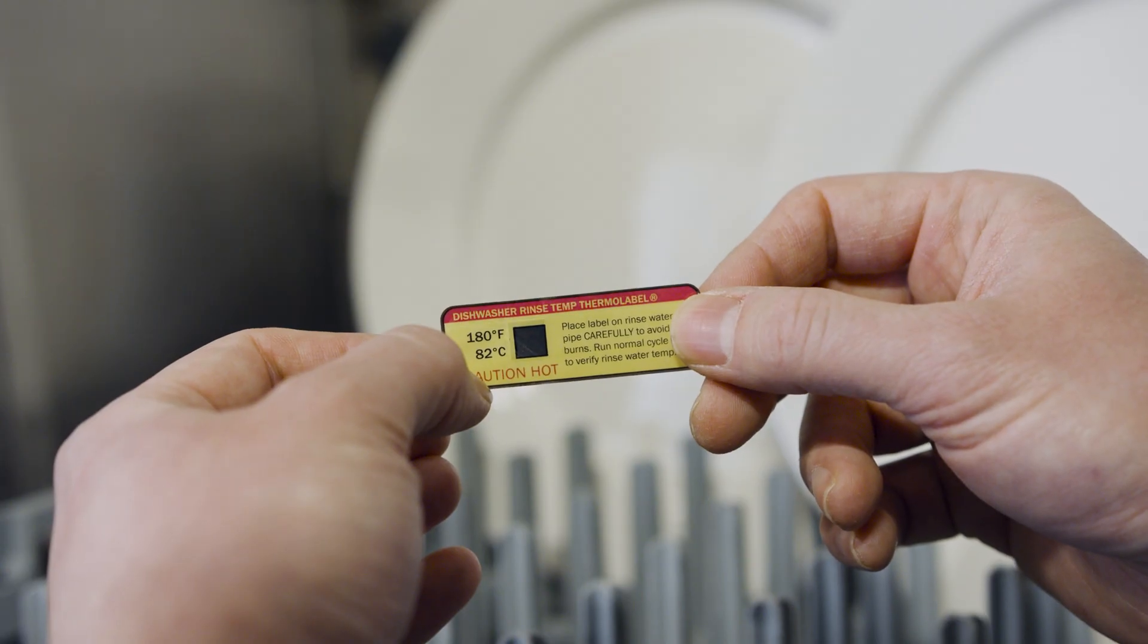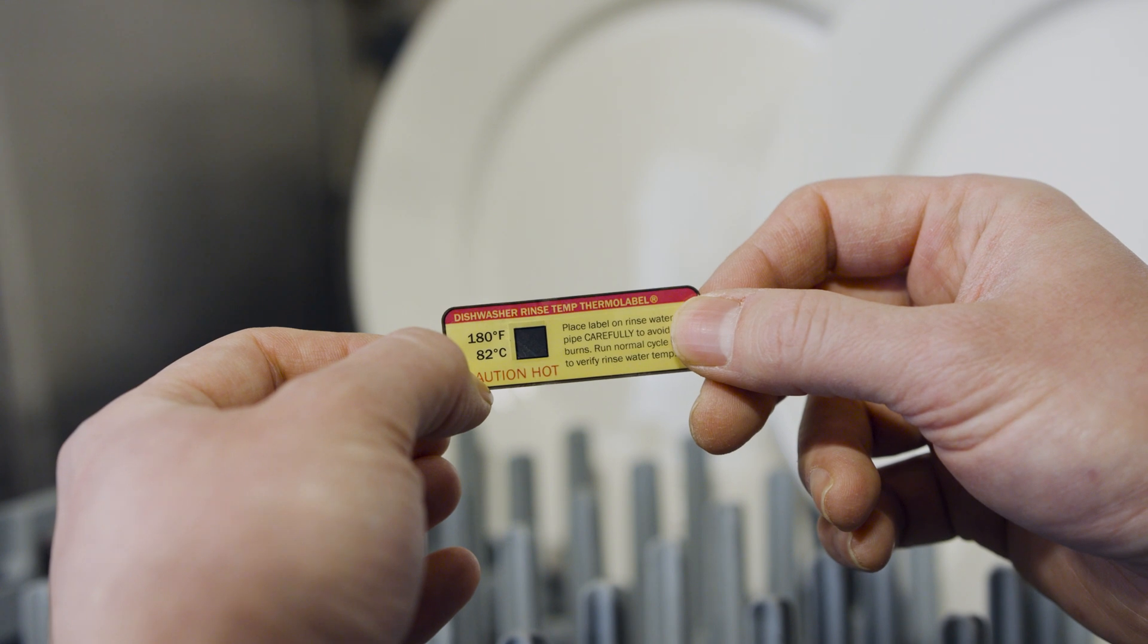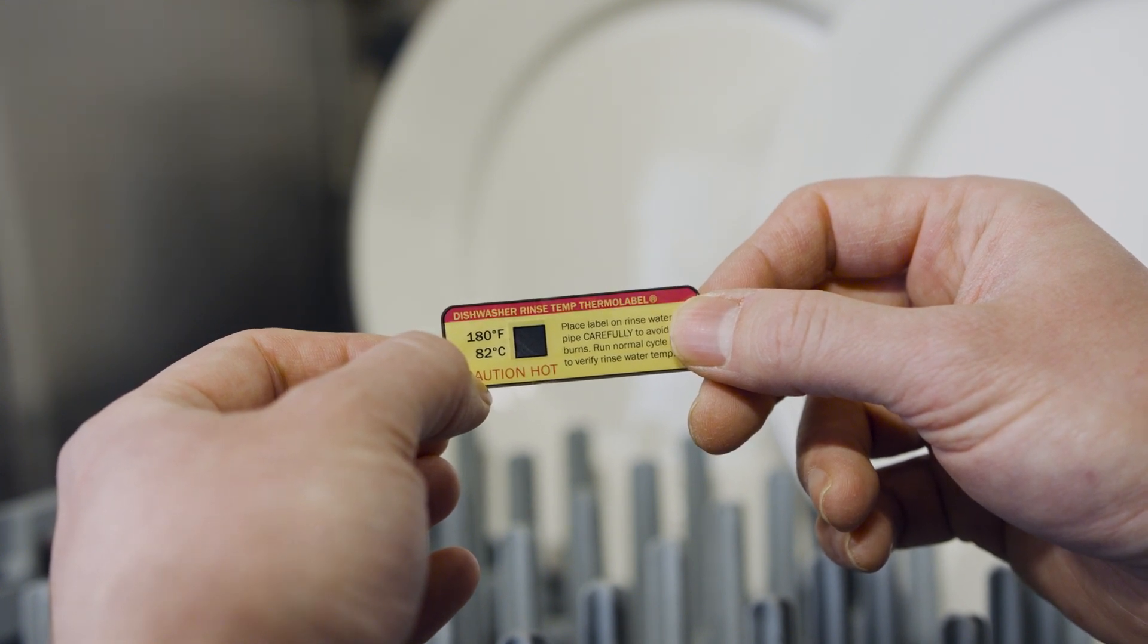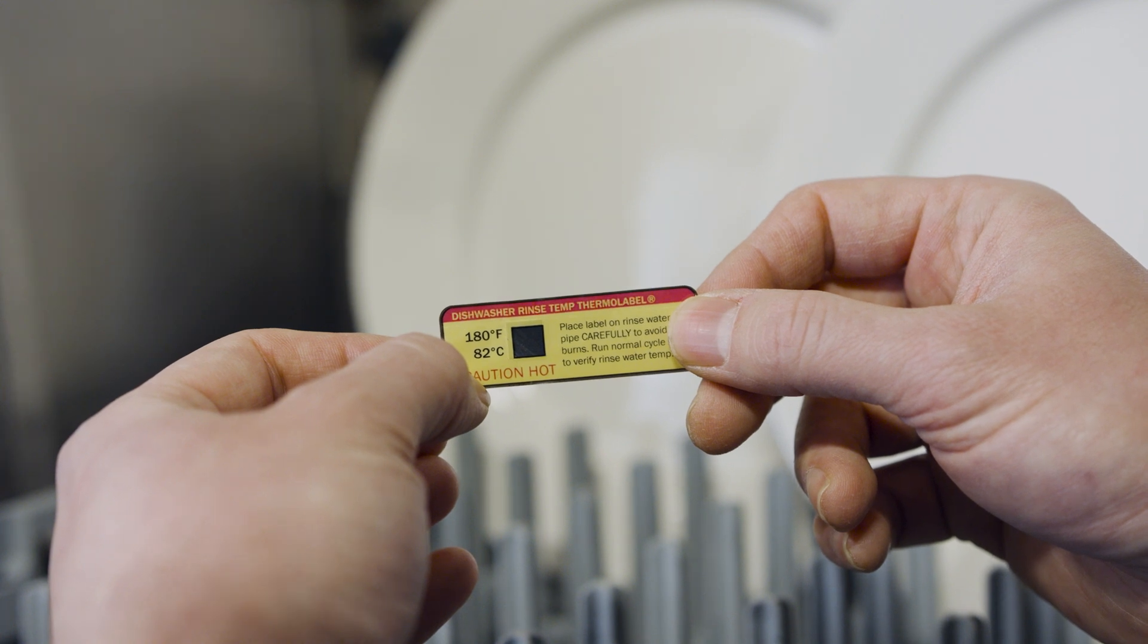Once the label has been used, the temperature sensitive square will remain black. It will not revert back and can be a lasting record that the 180 degrees temperature was reached.